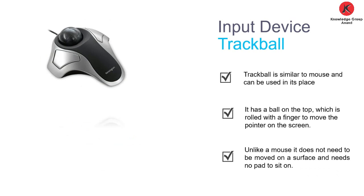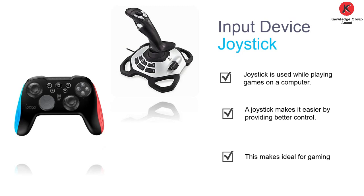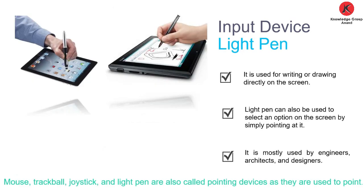The next input device is the trackball. A trackball is similar to a mouse, but it stays in a fixed position — you do not move it across a surface. It has a ball on top which is rolled with the finger to move the pointer on the screen. Next is the joystick, which is generally used for playing computer games. Then there is the light pen, used for writing or drawing directly on the screen, most widely used by engineers, architects, and designers. Mouse, trackball, joystick, and light pen are all called pointing devices.